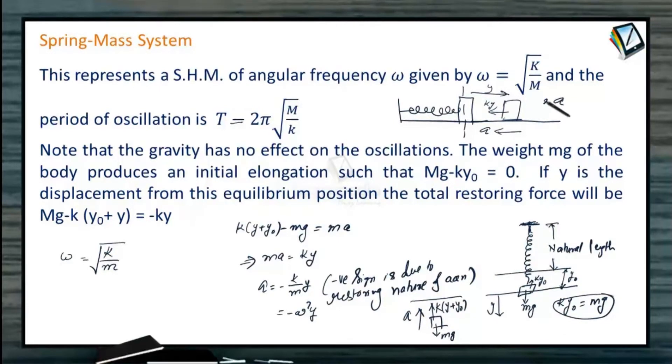Because if the block is in its natural length and pulled aside by distance Y, the spring will apply a force KY. Because of this force, the block accelerates. Mass into acceleration equals minus KY, so A equals minus K by M into Y. We can compare it with minus omega square Y, and omega that we get is same. It doesn't matter whether the system is made to oscillate horizontally or vertically.